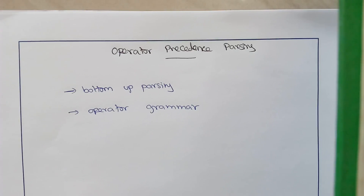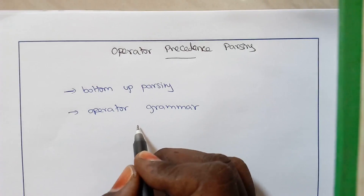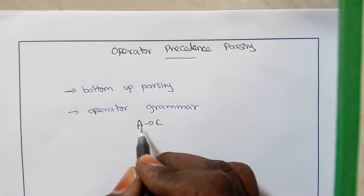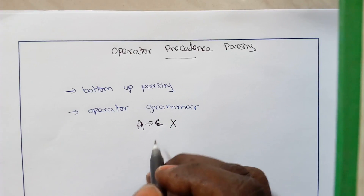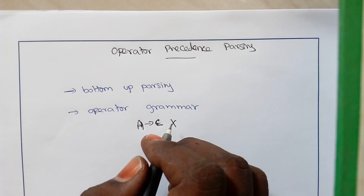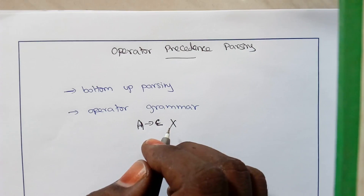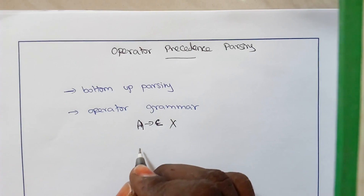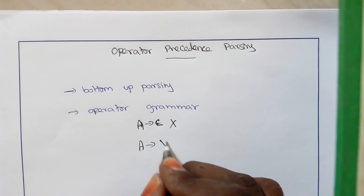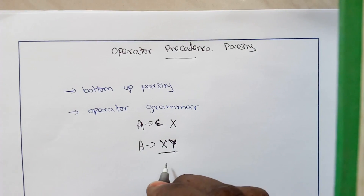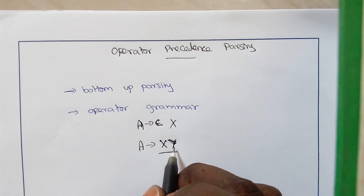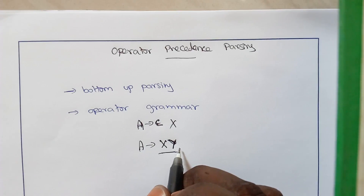In an operator precedence grammar, it should not have any epsilon production — for example, a production like A → ε should not be present in the grammar. Additionally, no two variables should be adjacent in a production; in a production, you should not have two variables that appear next to each other. These kinds of things should be eliminated from a grammar to make it an operator precedence grammar.